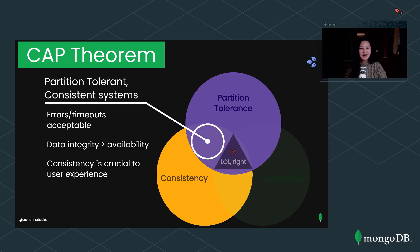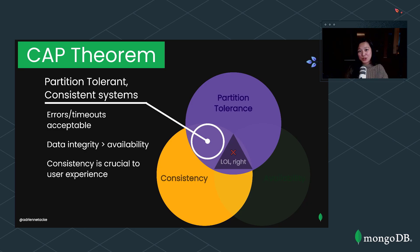In a partition-tolerant consistent system, we are sacrificing availability — choosing consistency over availability. This is something we want when errors and timeouts are acceptable, and when the integrity of our data is much more important than its availability. The age-old example is financial systems or systems of record — those data points have to always be correct and consistent to the user.